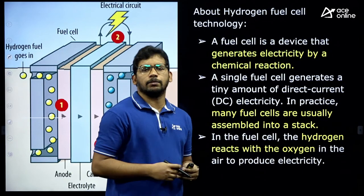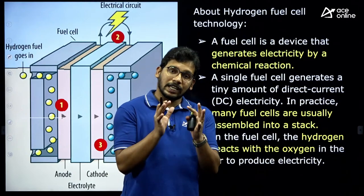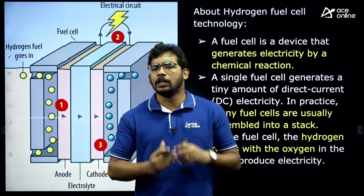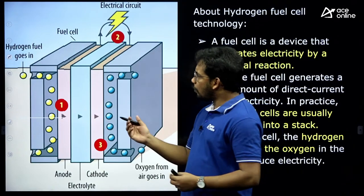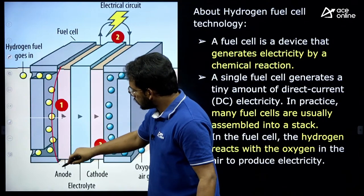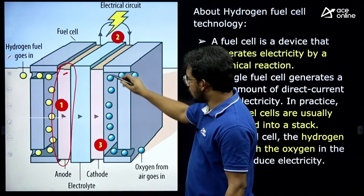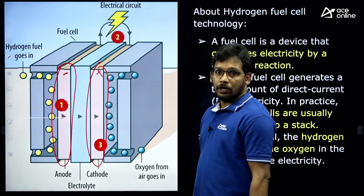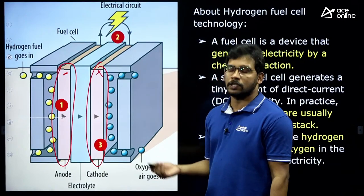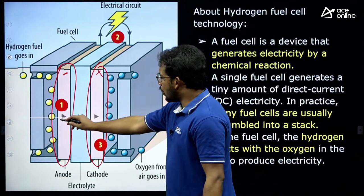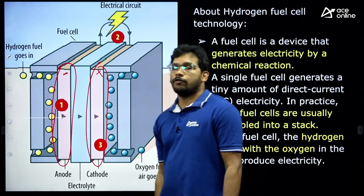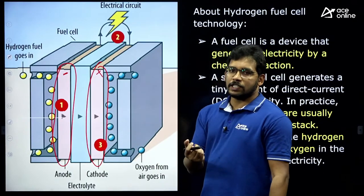The basic mechanism of fuel cells is that they convert chemical energy into electrical energy. There are two electrodes: one is the anode, which is negatively charged, and the cathode, which is positively charged. Understanding the mechanism is important, otherwise you won't remember the facts. Hydrogen fuel or hydrogen gas is sent through the anode, which generates certain electrons.